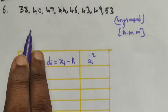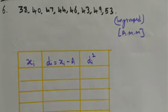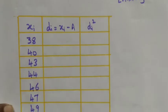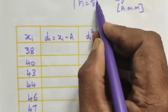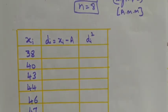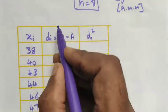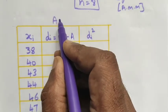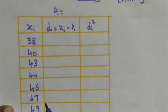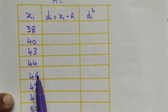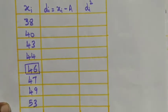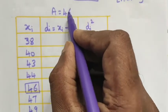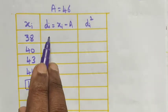The data is arranged in ascending order. The number of students n is equal to 8. We want to find the assumed value a — select a number nearer to the middle value. Here I am taking 46 as the assumed value, so a = 46.